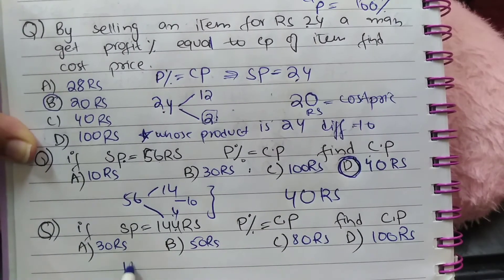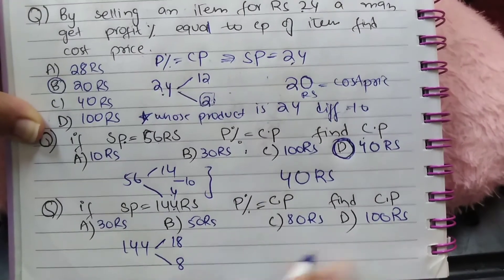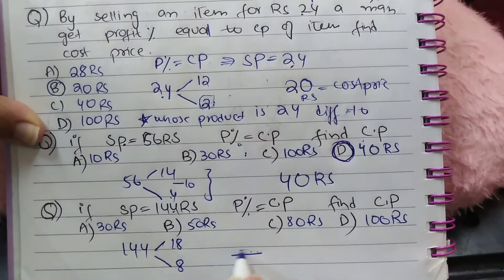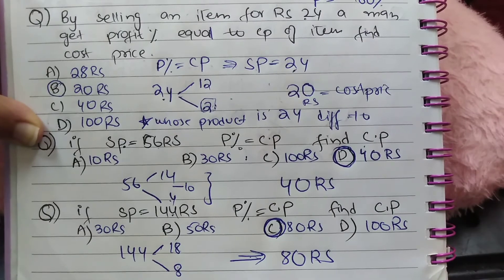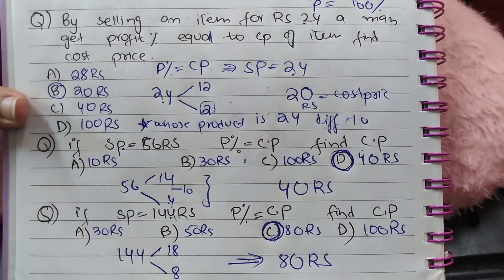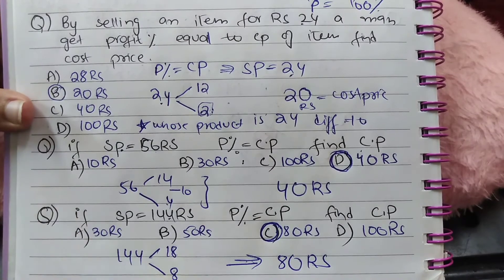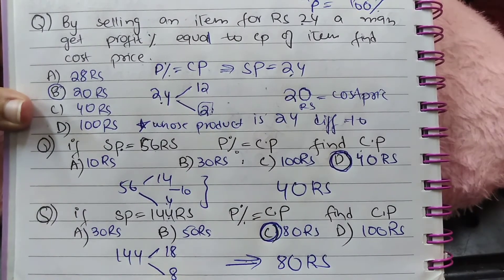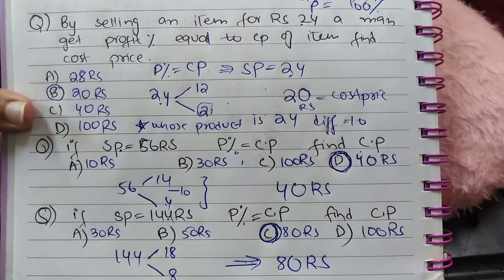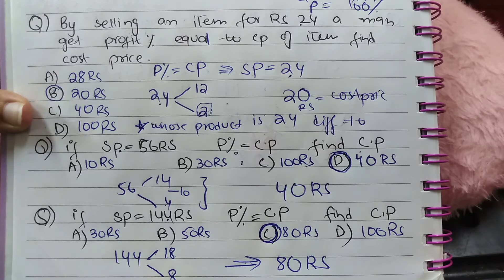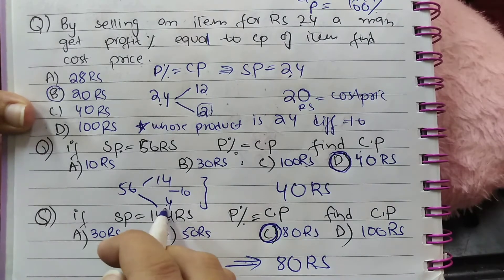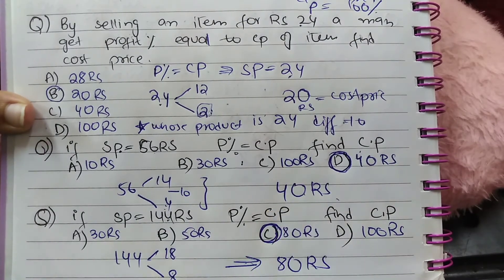For selling price 144: 18 × 8 = 144 and 18 − 8 = 10, so take the lower term 8, put zero in front — cost price = 80. In all such questions where selling price is given and profit percent equals CP, use this shortcut: factorize into two factors whose product equals the selling price and whose difference is 10; take the lower factor and append zero.